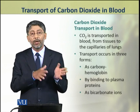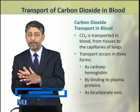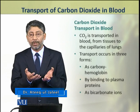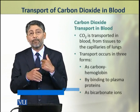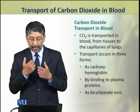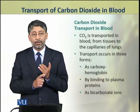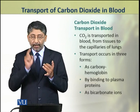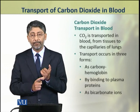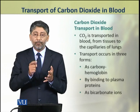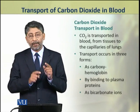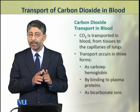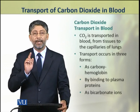The carbon dioxide produced in the tissues of any part of the body enters the blood, and its final route is to come to the lung capillaries, from where it diffuses out to the environment. This transport of carbon dioxide occurs in three different forms: as carboxyhemoglobin, by binding to plasma proteins, and as bicarbonate ions. We will discuss all three methods one by one in detail.